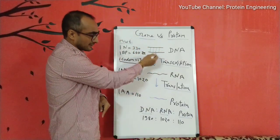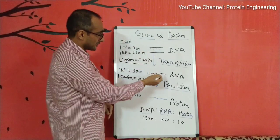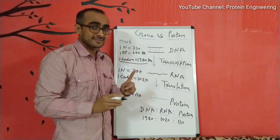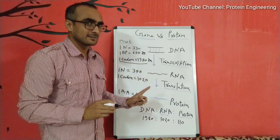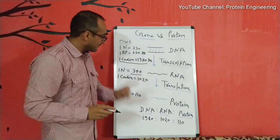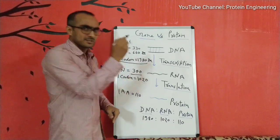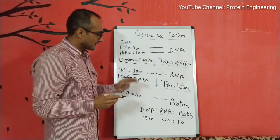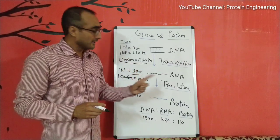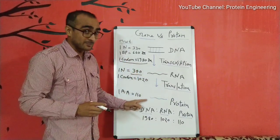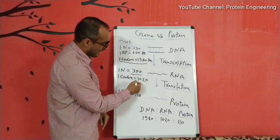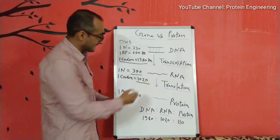This DNA sequence is then converted into RNA by the process of transcription. In the case of RNA, which is generally single-stranded, the average molecular weight of a nucleotide is 340 daltons. Similarly, three nucleotides of RNA make one codon, which codes for a single amino acid in protein. So one codon of RNA has an average mass of 1020 daltons.